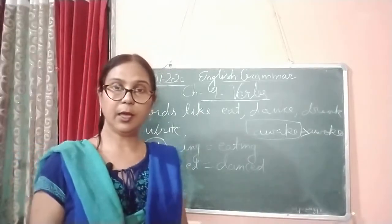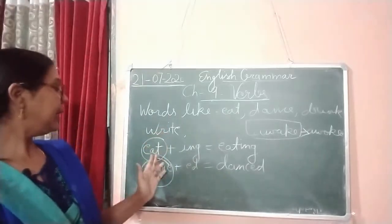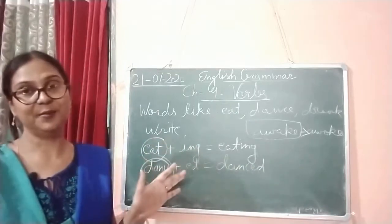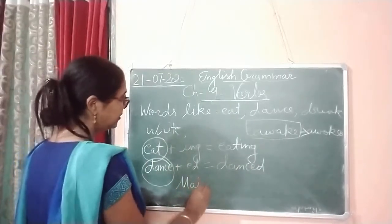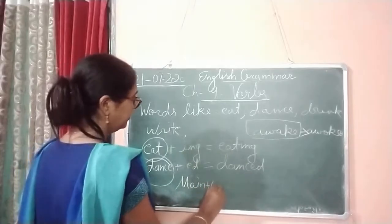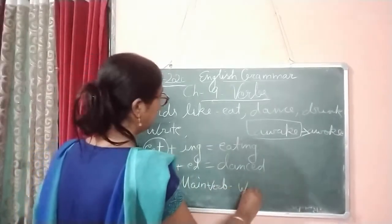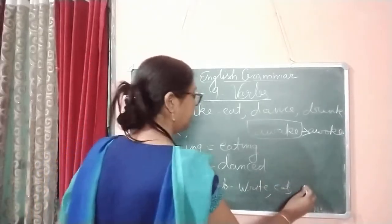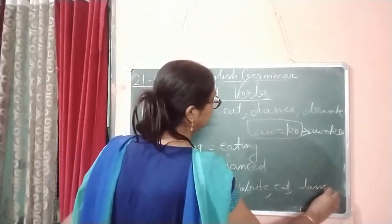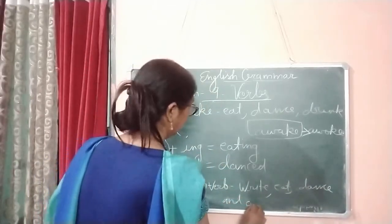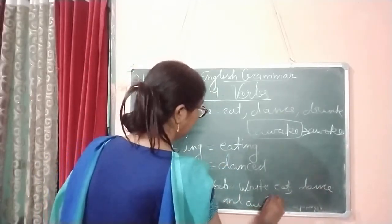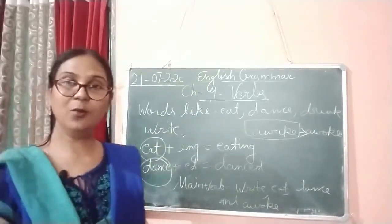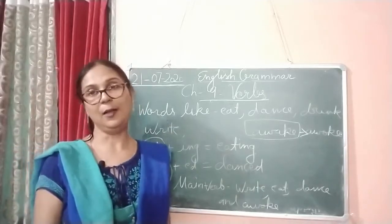So children, the main verbs are: write, eat, dance, and awake. These are all main verbs. Now we are moving to auxiliary verbs or helping verbs. Helping verb means something that can support — in this case, the helping verb is going to support the main verb.